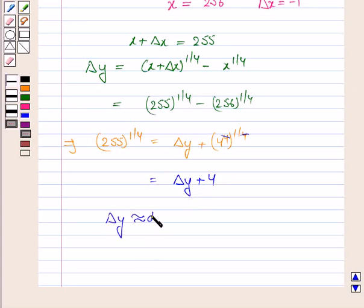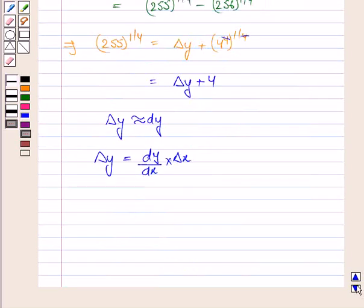Now we know that delta y is approximately equal to dy. And delta y then given by dy by dx into delta x.